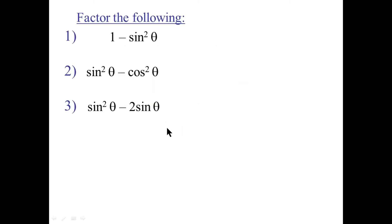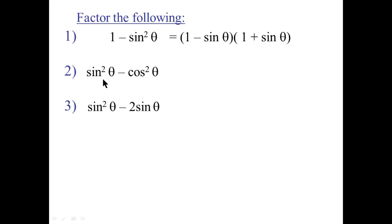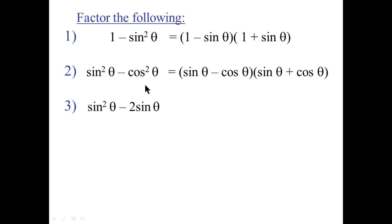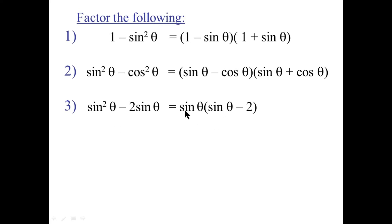Let's recall a little bit about factoring. Here's 1 minus sine squared — it's a difference of squares, so it factors to 1 minus sine times 1 plus sine. Sine squared minus cosine squared is also a difference of squares: sine minus cosine times sine plus cosine. Sine squared minus 2 sine — common factor out the sine — gives sine times sine minus 2. When you write a line, check a line: multiplying out gives sine squared minus 2 sine, so that's correct.